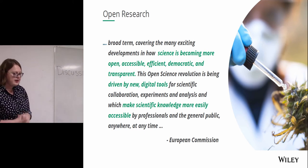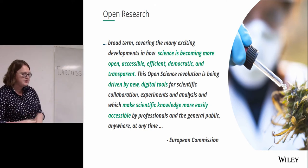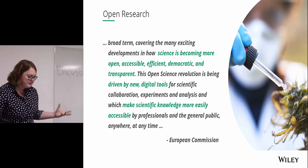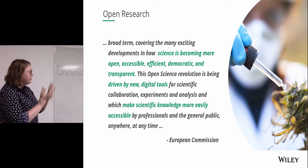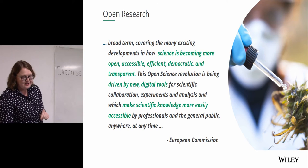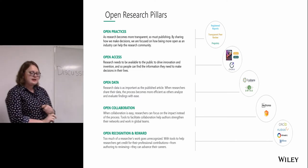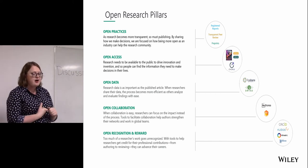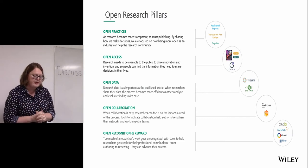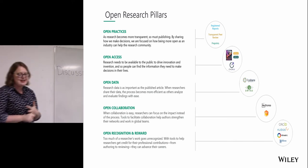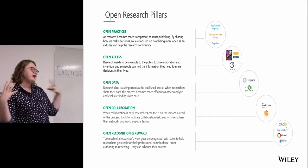Moving on to open research more broadly: the European Commission describes it as a broad term covering exciting developments in how science is becoming more open, accessible, efficient, democratic, and transparent. It's really driven by digital tools and is about making scientific knowledge more easily accessible. The open research pillars include open practices — such as open peer review and transparent peer review — open access, open data in repositories, open collaboration, and open recognition and reward.